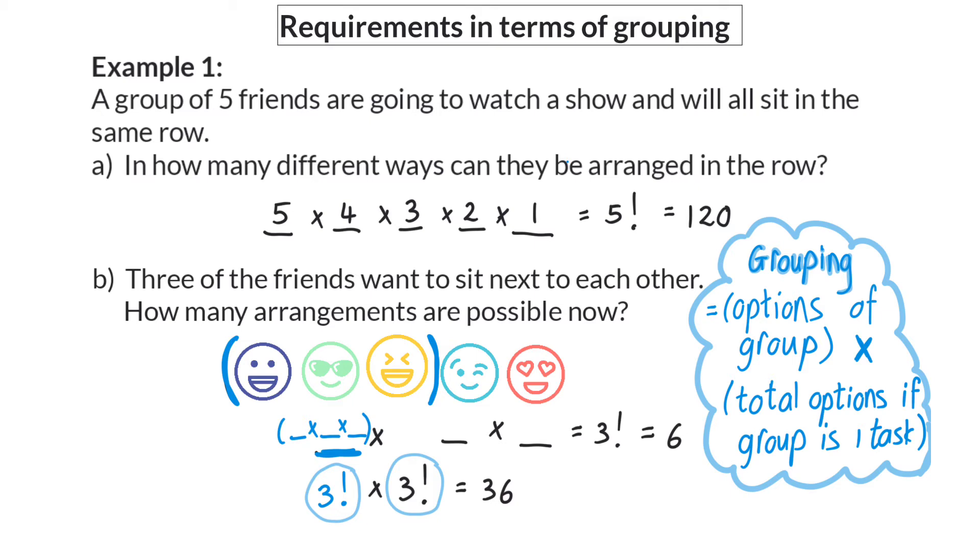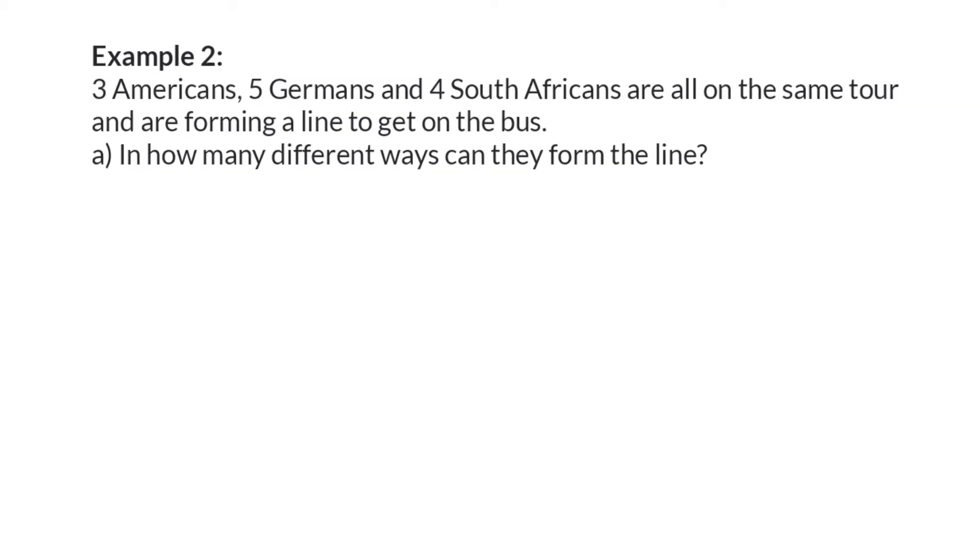Let's have a look at another example. Example two: Three Americans, five Germans and four South Africans are all on the same tour and are forming a line to get on the bus. In how many different ways can they form the line?